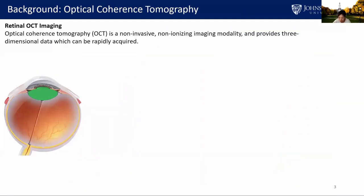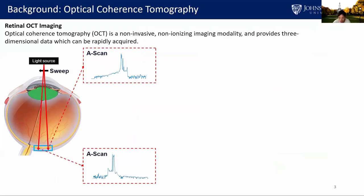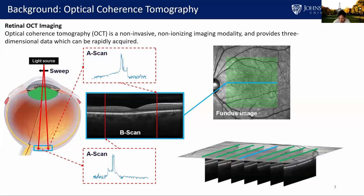Imaging the human retina is challenging. Luckily, optical coherence tomography is a non-invasive, non-ionizing imaging modality that provides three-dimensional data which can be rapidly acquired. The light source sends out a laser beam through the eyeball and acquires a one-dimensional depth signal, the A-scan. The light source then sweeps the laser beam across a line on the retinal fundus to acquire multiple A-scans, forming a 2D cross-sectional image, the B-scan. The 3D volume is a stack of B-scans represented as a 3D matrix.